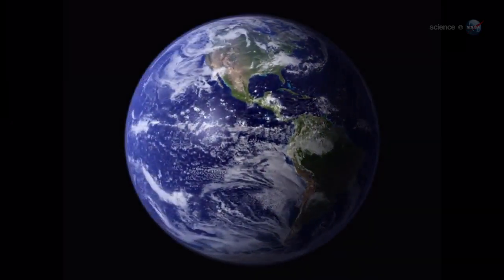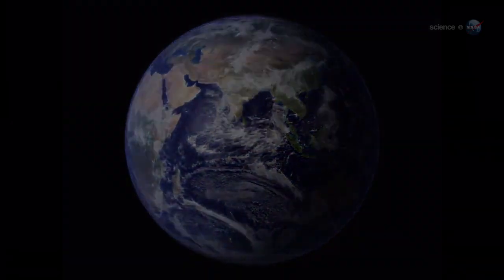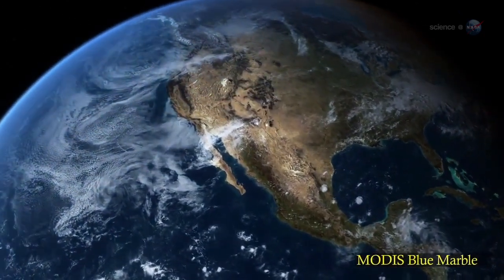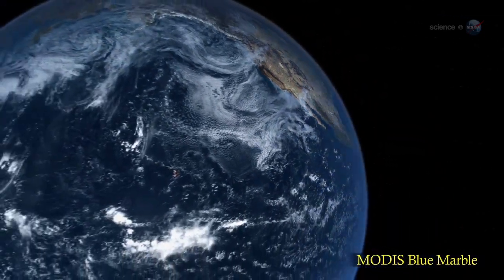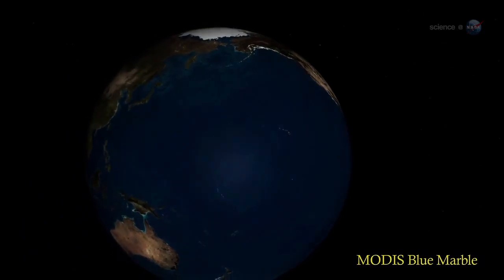As Arthur C. Clarke once remarked, how inappropriate to call this planet Earth when it is quite clearly ocean. Indeed, Earth is a water world. The dry land most of us call home covers less than a third of the planet's surface. More than 70% of Earth is underwater.